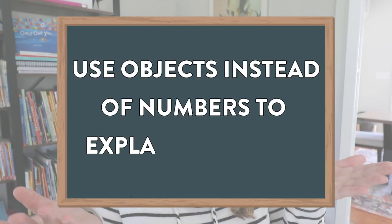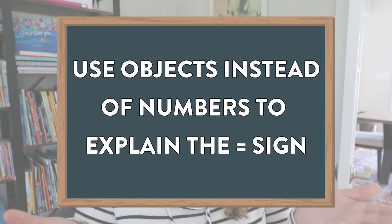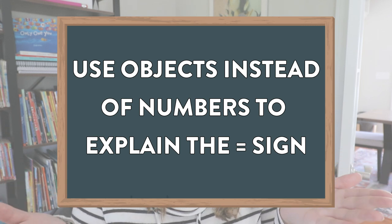Now that we know the four main difficulties students experience when learning missing addend problems, let's address them. When we can identify these issues, we can figure out what we need to do to help them understand this concept better. Activity number one to help teach missing addend problems is to use objects instead of numbers to show the meaning of the equal sign.